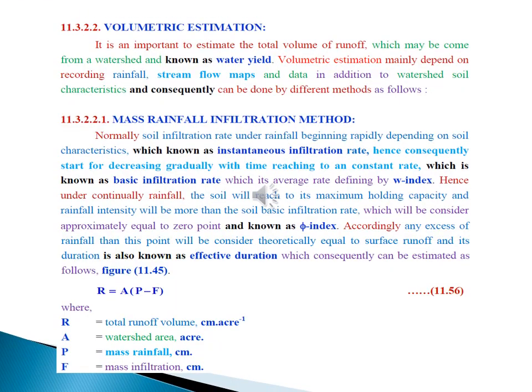Number two, volumetric estimation. Really, it is important to estimate the total volume of runoff which may come from a watershed known as water yield. Volumetric estimation mainly depends on recording rainfall, streamflow maps, and data in addition to watershed soil characteristics. And consequently, it can be done by different methods such as mass rainfall infiltration method.